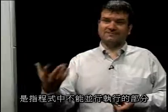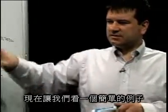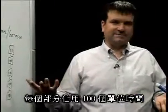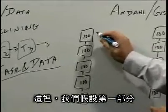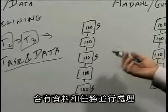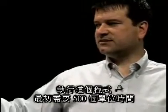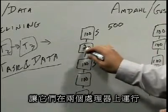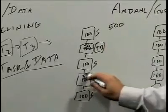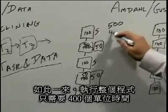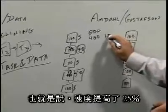Let's take a look at a simple example: a program that has five different parts, each taking 100 units of time. Assume the first, third, and fifth parts are serial — we won't find parallelism there. But the second and fourth parts have data or task parallelism. Initially the program takes 500 units of time. If we run the second and fourth parts on two processors so they only take 50 units of time each, the overall program now takes 400 units of time — a 25% speedup.